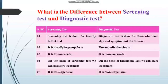Lekin diagnostic test ek bhi ho sakti hai aur multiple tests bhi yaani group ke form mein bhi ho sakti hai. Screening test less accurate aur less specific hoti hai — for example agar koi bhi patient ka HBS, HCV, ya HIV test reactive ya positive ya detected aa jata hai, toh us ke liye hum further ELISA karte hain. Agar ELISA pe bhi detected ya normal se zyada aata hai toh hum quantitative ya qualitative PCR perform karte hain.